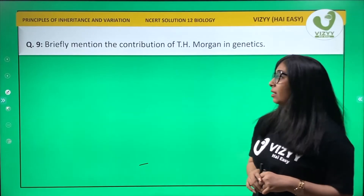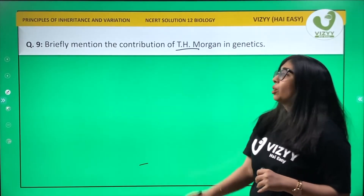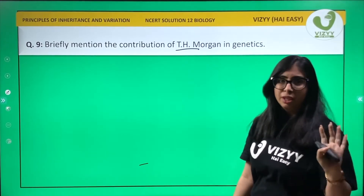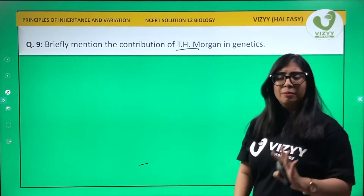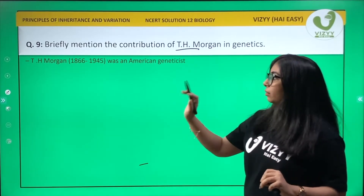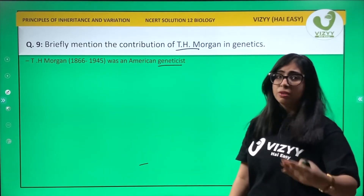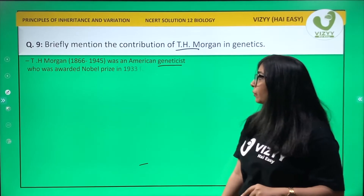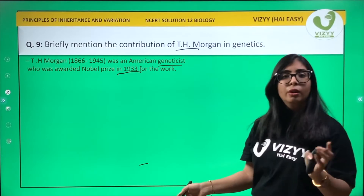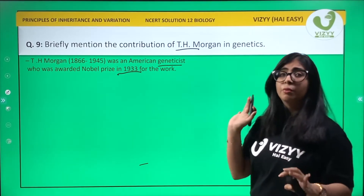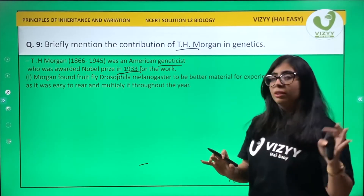Question 9 is: briefly mention the contributions of T.H. Morgan. So who was T.H. Morgan? T.H. Morgan was an American geneticist — a person who studies genetics. He was awarded the Nobel Prize in 1933 for his work.